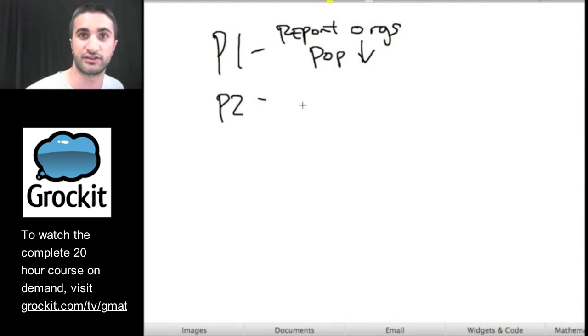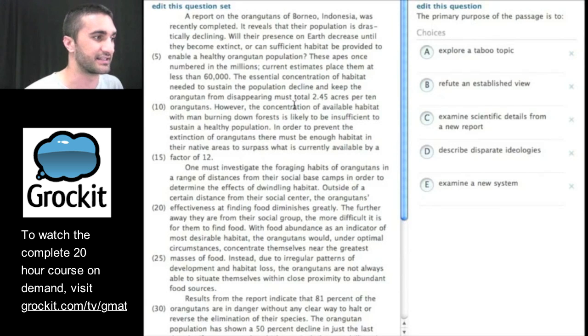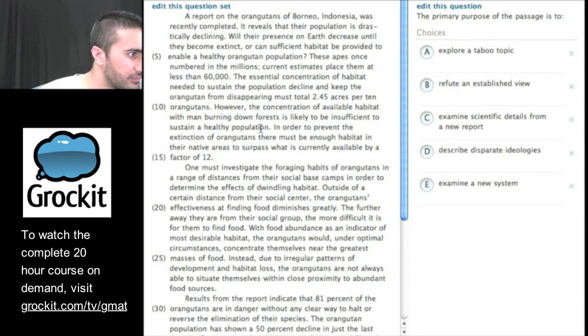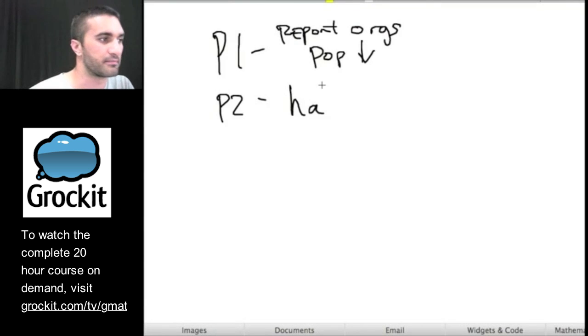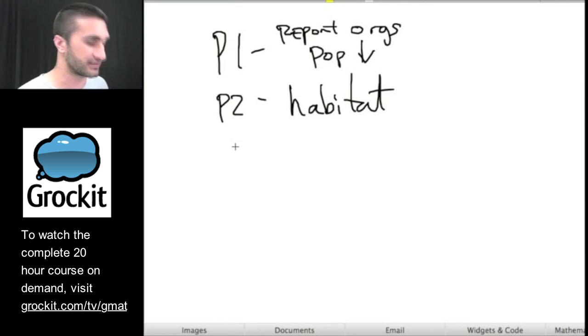In paragraph two, go ahead and do the same thing, first and last sentence. So I see a lot of mention of habitat and that the habitat loss is important and that they need habitat in as part of the issue of orangutans population decreasing.